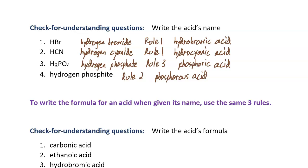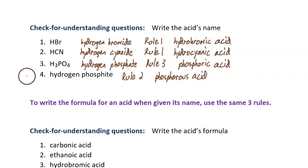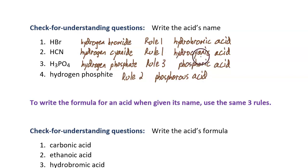Here are the answers. For all of these acids, you first need to know the original way to say it, because it's the ending of the word that determines what rule to use. HBr is hydrogen bromide. It ends in "-ide", so it's rule one. The acid name starts with hydro and ends in "-ic": it's hydrobromic acid. Number two, HCN — that's hydrogen cyanide. It ends in "-ide", so again it's rule one. The name starts with hydro and ends in "-ic": hydrocyanic acid.